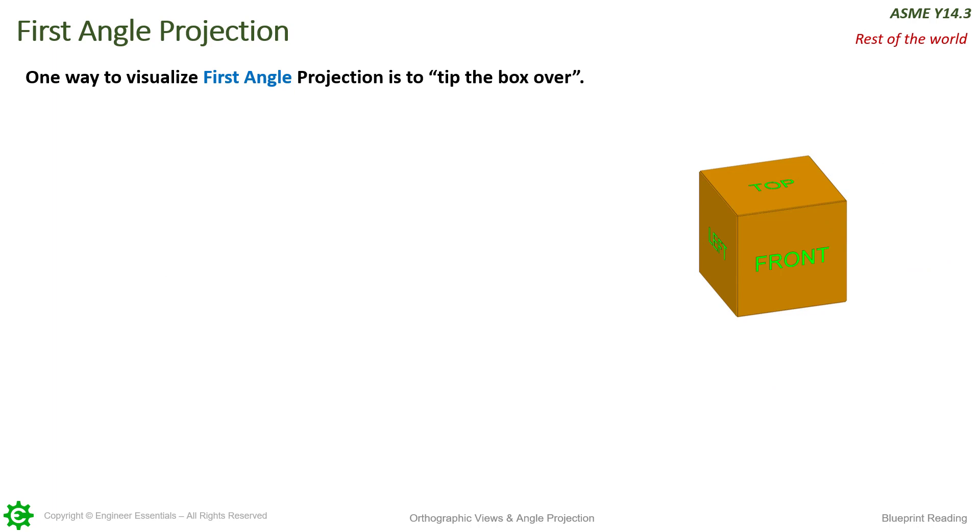First angle projection is a little bit different. Instead of unfolding our box, we do what's called tipping the box over. If we keep the front view constant, the view seen from front to back in each tip position is the view created.